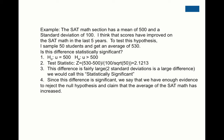For example: the SAT math section has a mean of 500 and a standard deviation of 100. I think scores have improved in the last five years, so to test this I sample 50 students and get an average of 530. Looking at the alternative first — 'improved' means greater than 500, so the alternative hypothesis is mu greater than 500. The null hypothesis is mu equals 500, since it's been purported that the SAT math section has a mean of 500.